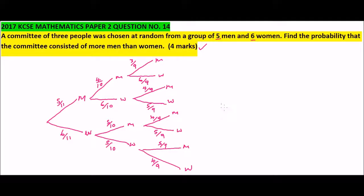This is our complete tree diagram. We need to find the probability that the committee consists of more men than women. Following the first branch, we have man, man, and man — that is 3 men.